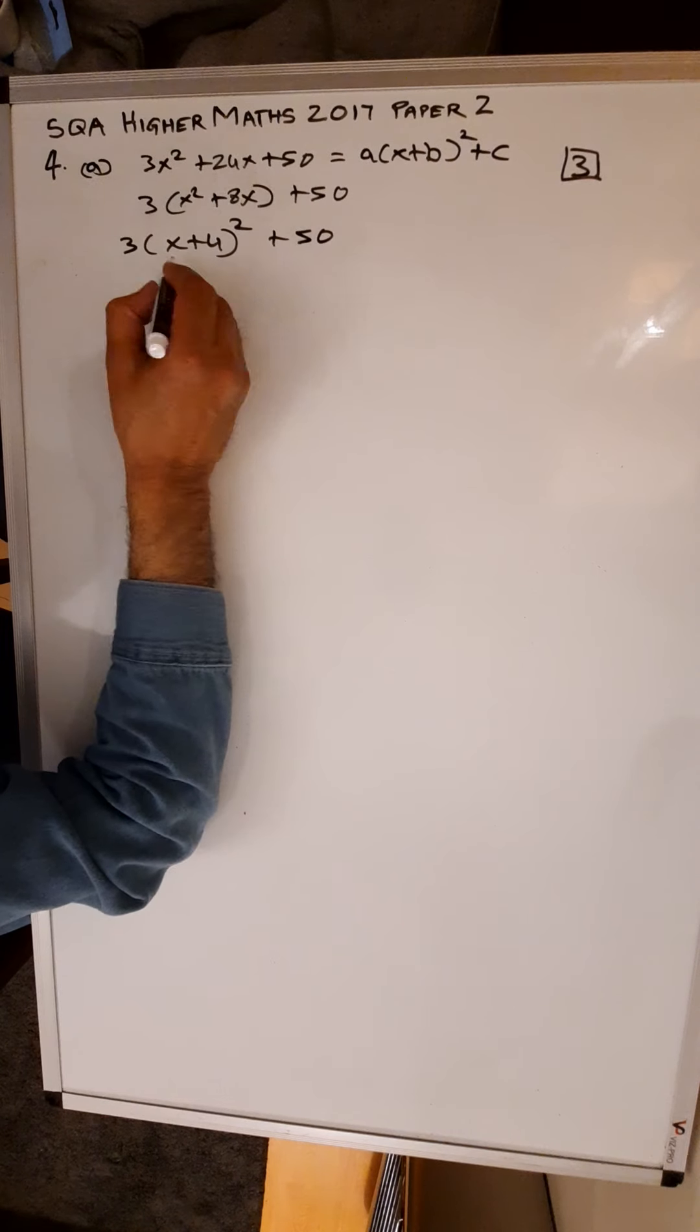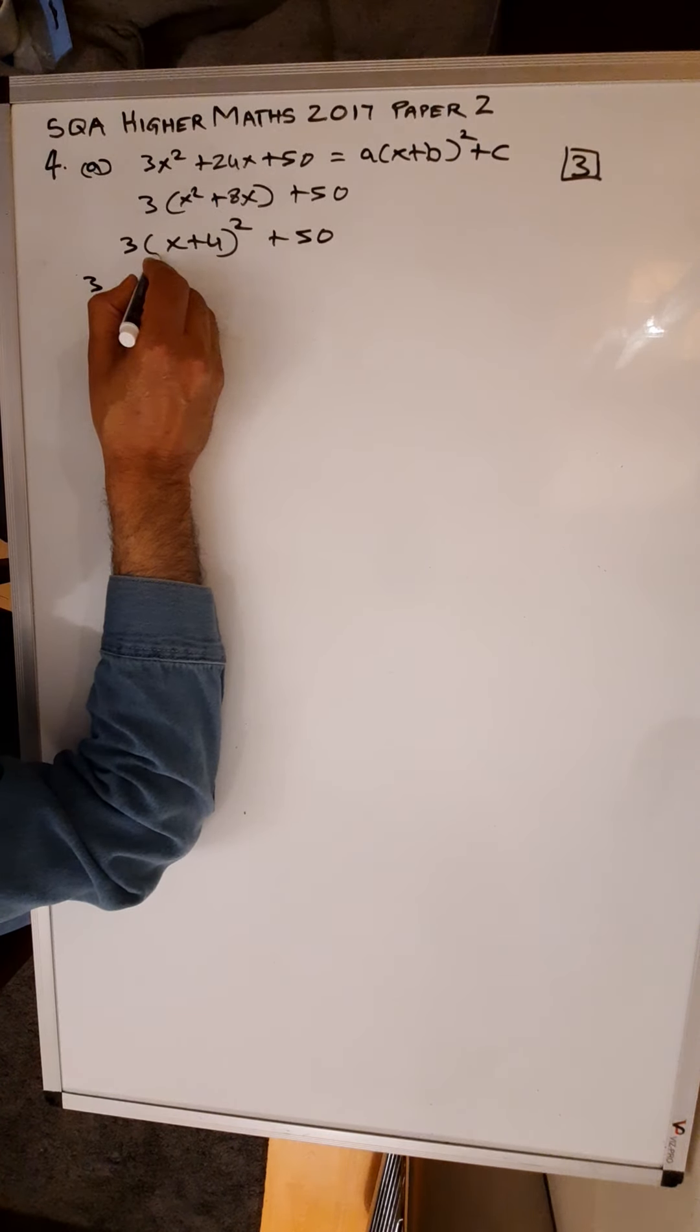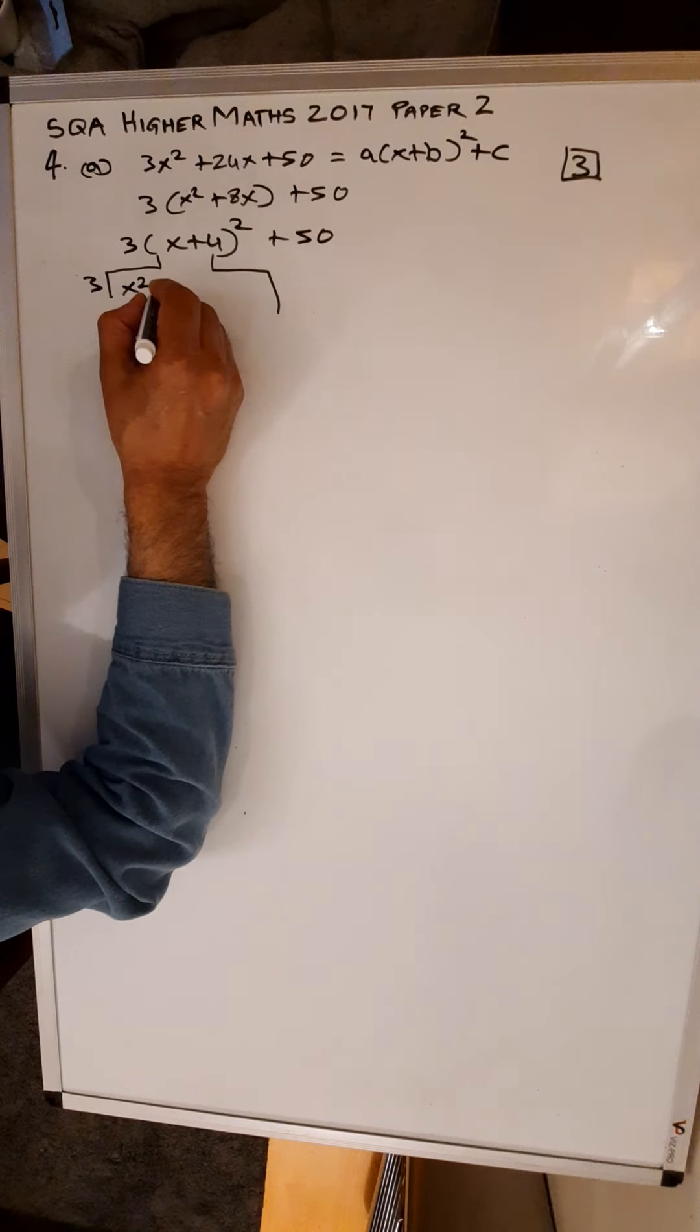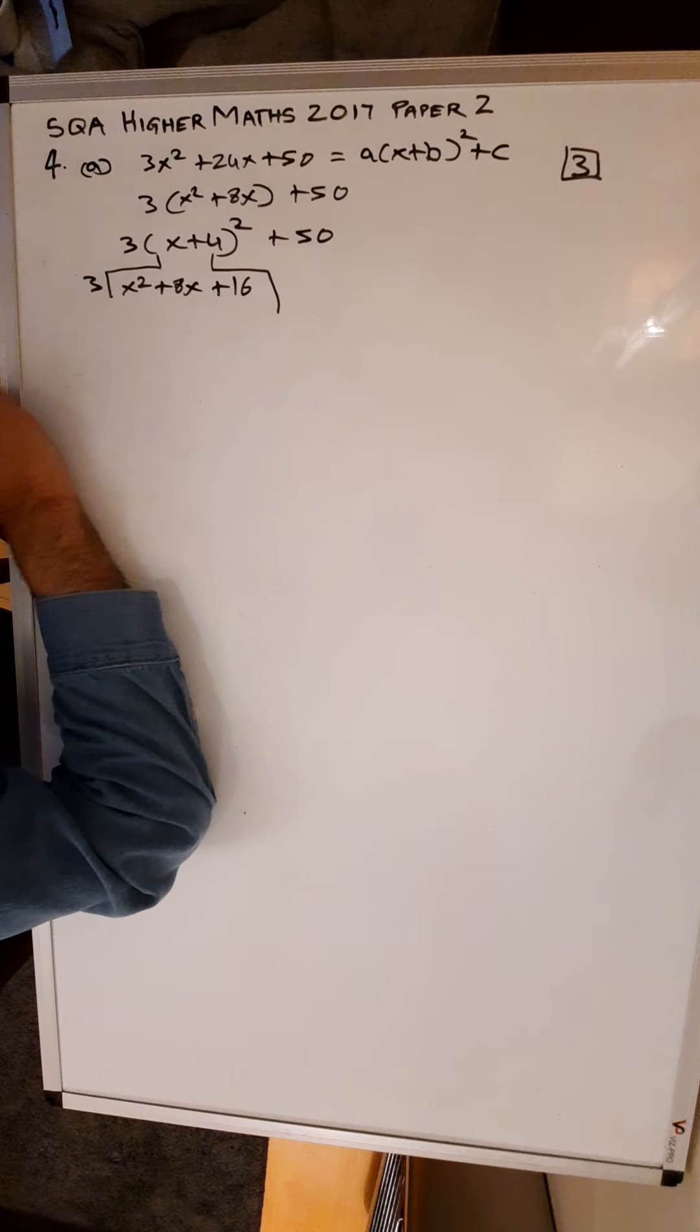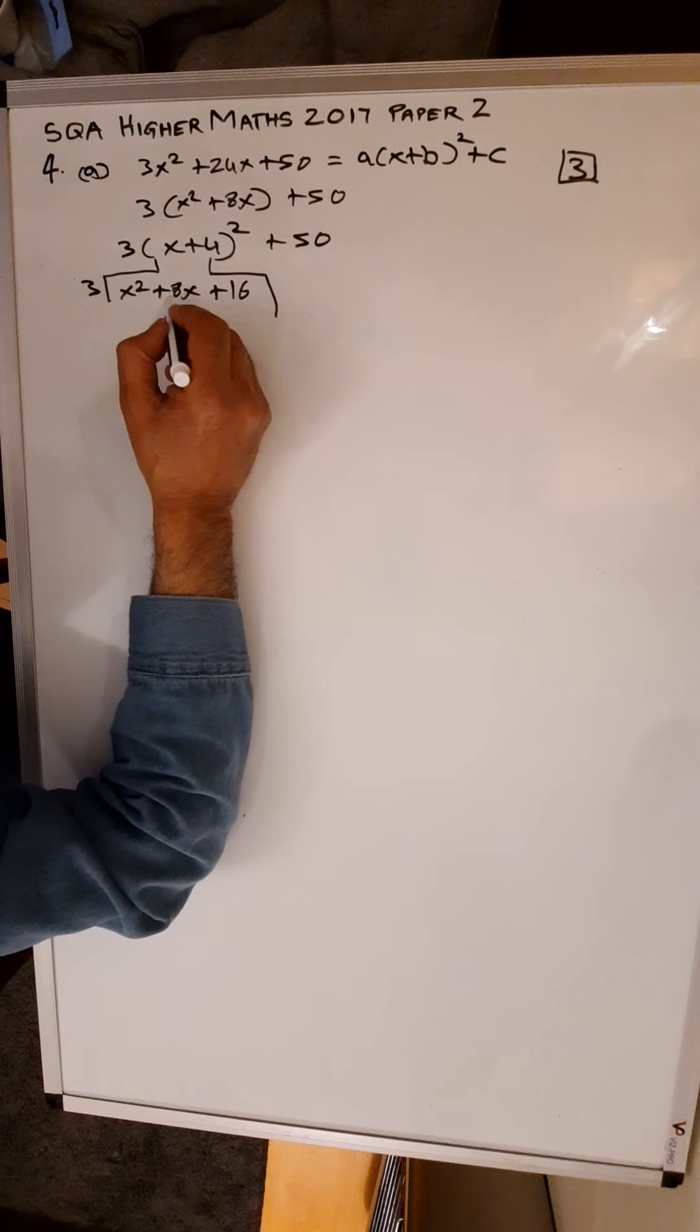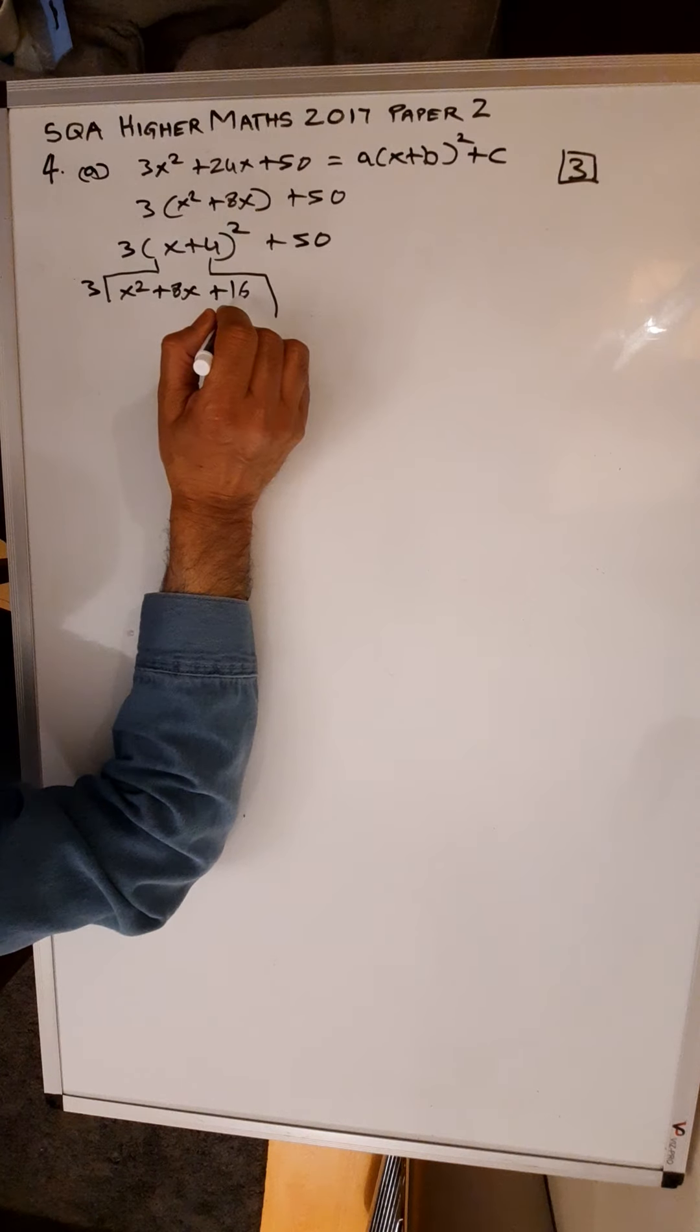You still got your 3 outside. But when you multiply this out, what you get is x squared plus 8x plus 16. We are going to get 3x squared plus 24x which you need. This 3 times 16 is 48.